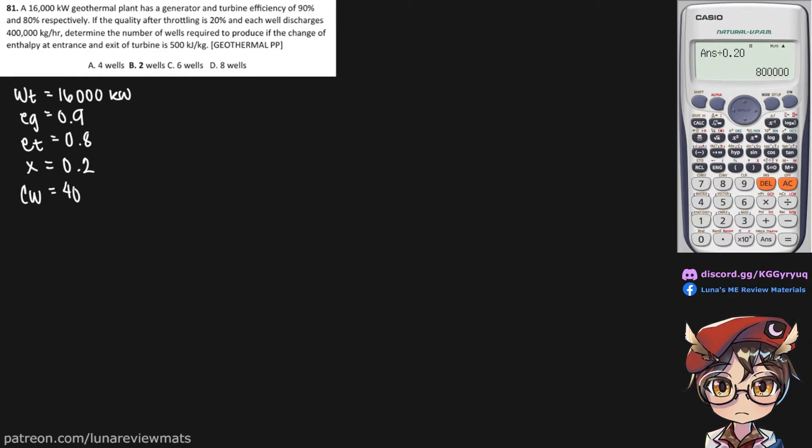Determine the number of wells required to produce if the change of enthalpy at entrance and exit of turbine is 500 kJ per kg, delta H, and we need to find the number of wells, let's say that's n.